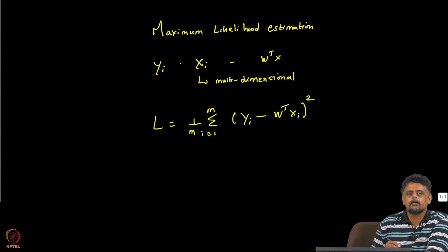The loss function is nothing but you have summation over m data points square. So that was our model and we took the derivative of this model, we used gradient descent to estimate W.